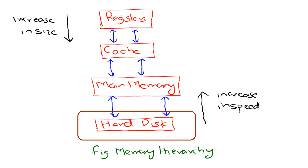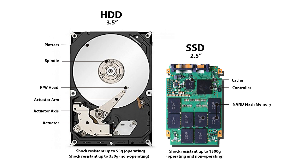Finally, at the bottom of the hierarchy we have secondary storage, such as hard disk drives or solid-state drives. These are the slowest and cheapest form of memory, but they offer the highest capacity. Hard disks use spinning platters and read-write heads to store data magnetically. SSDs, on the other hand, use flash memory, making them much faster and more durable than hard disk drives. Secondary storage is used to store the operating system, applications, and all your files.